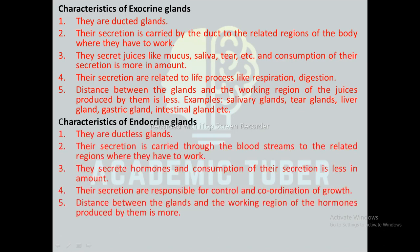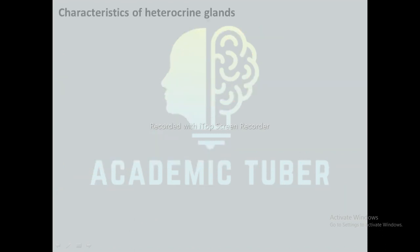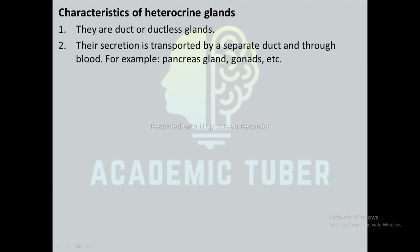Endocrine glands are ductless glands, meaning they do not have ducts. The secretion is carried through the bloodstream to the related region where it has to work. The secreted hormones are consumed in less amount. The secretions are responsible for control and coordination of growth, and the distance between the gland and the working region of the hormones produced is more.